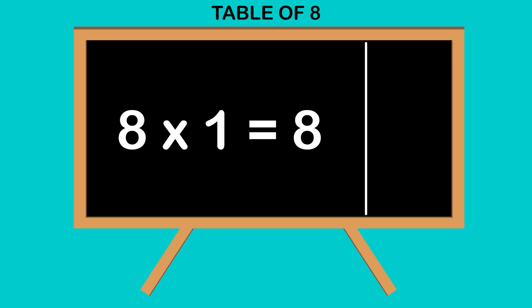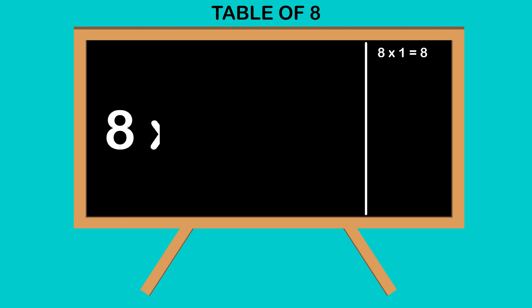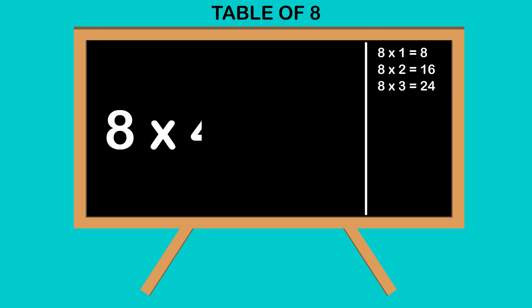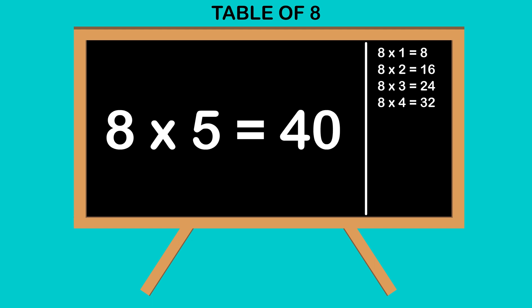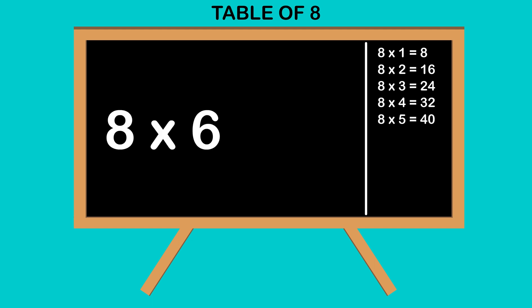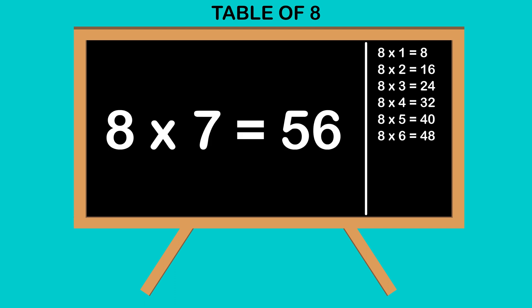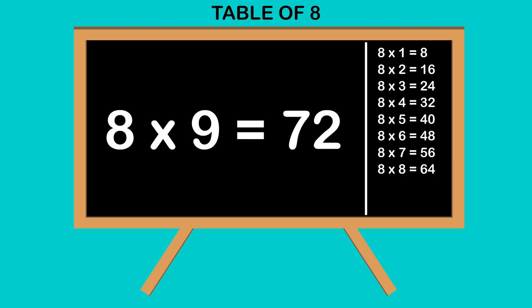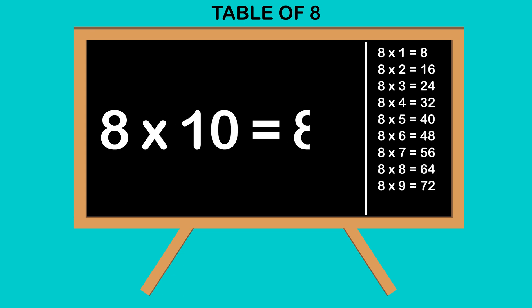Table of 8. 8 1's are 8, 8 2's are 16, 8 3's are 24, 8 4's are 32, 8 5's are 40, 8 6's are 48, 8 7's are 56, 8 8's are 64, 8 9's are 72, 8 10's are 80.